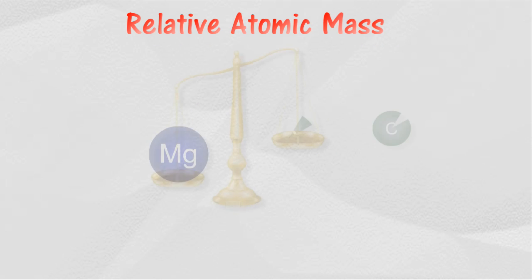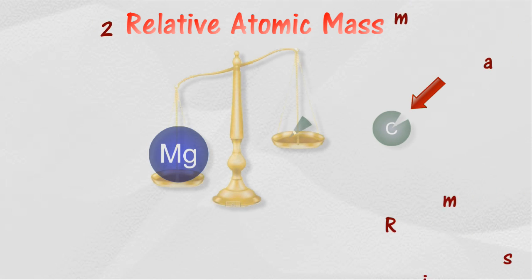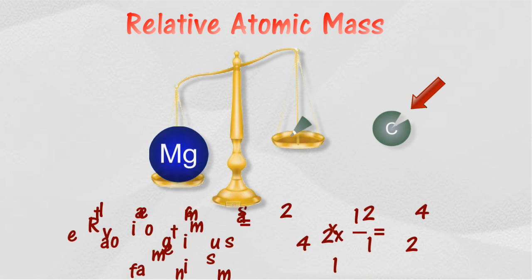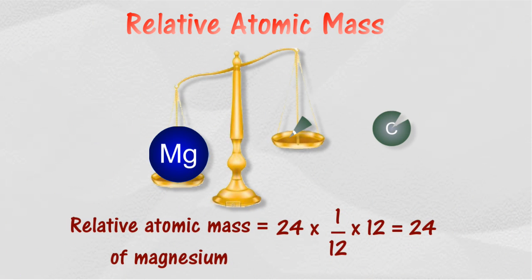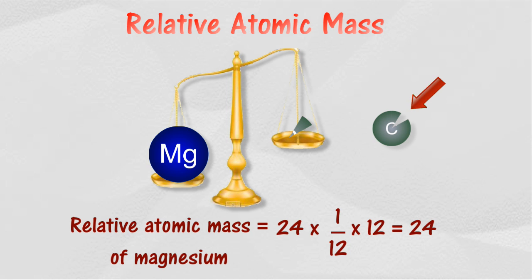For example, if a magnesium atom is 24 times greater than 1/12 of the carbon-12 atom, thus the relative atomic mass of magnesium will be 24. Just a quick note: the relative atomic mass has no units.